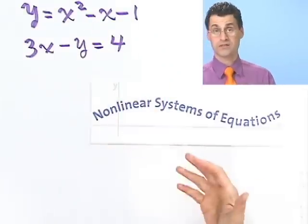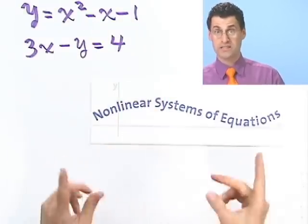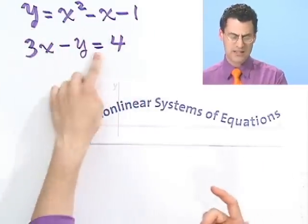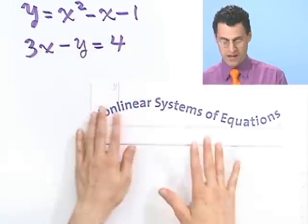And I want to find out where these two things are satisfied at the same time. Now you can see this is not linear because this piece right here is a parabola, a quadratic. This is a line, but we have a quadratic, so this is a nonlinear system.